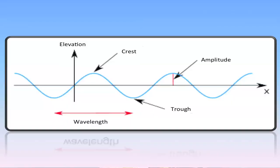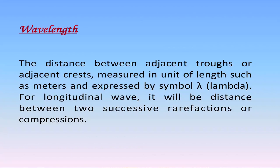Let us discuss how we can represent a wave. We need to describe a friend by name, height, color, gender, etc. for identifying. Similarly, we have to specify some qualities — parameters — for wave description. A wave is represented in terms of wavelength, amplitude, frequency, and time period. Wavelength is the distance between crests and troughs, measured in units of length such as meters, and expressed by the symbol lambda.